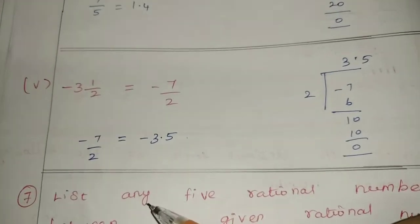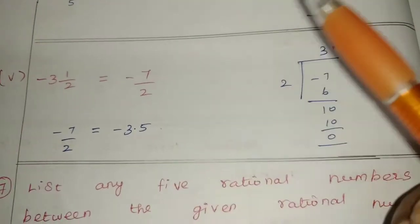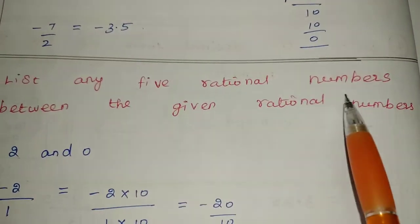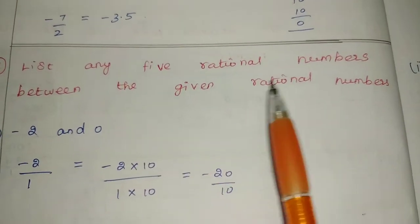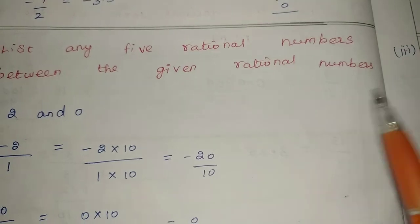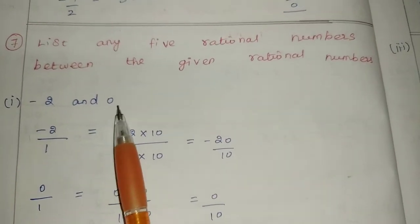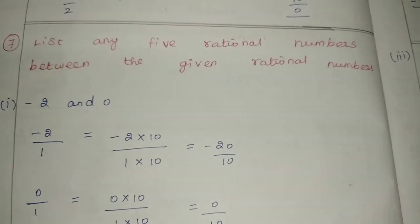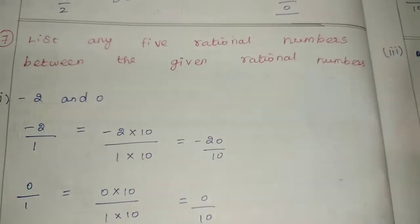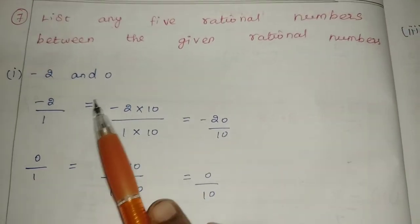Number 7: list any 5 rational numbers between the given rational numbers. These are two values — we call 5 rational numbers between them. The two numbers are minus 2 and 0.